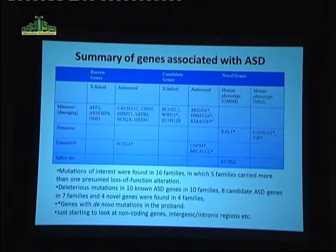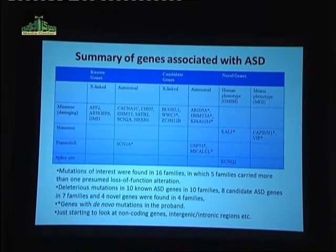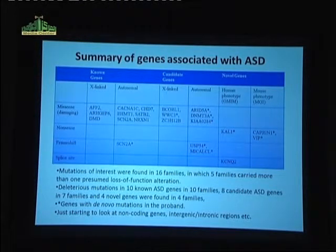In the sequencing of these families, in 50% of the cases we were able to find what we think is a mutation that either causes autism or one of the medical complications associated with autism in that individual. Mutations of interest were found in 16 families, in which 5 carried more than 1 presumed loss-of-functional alteration.